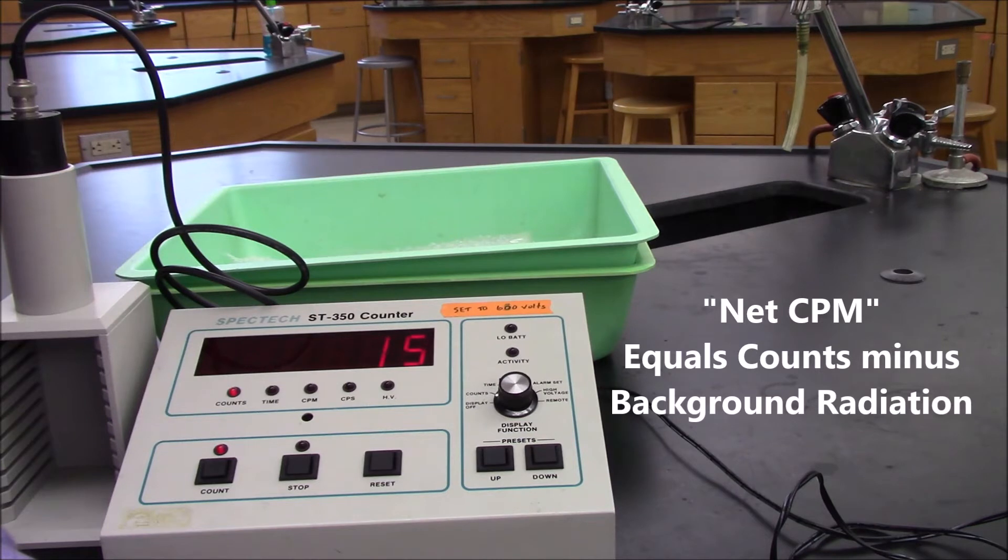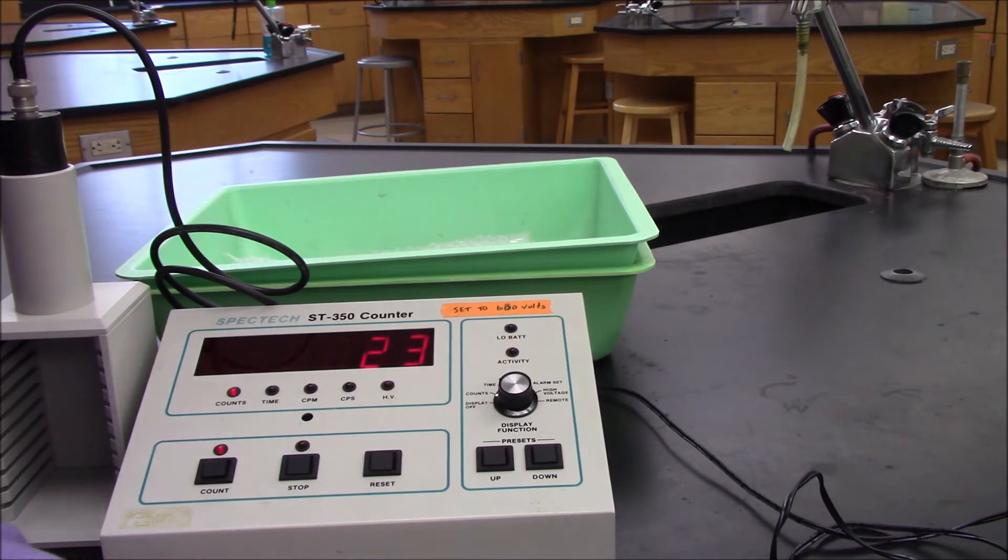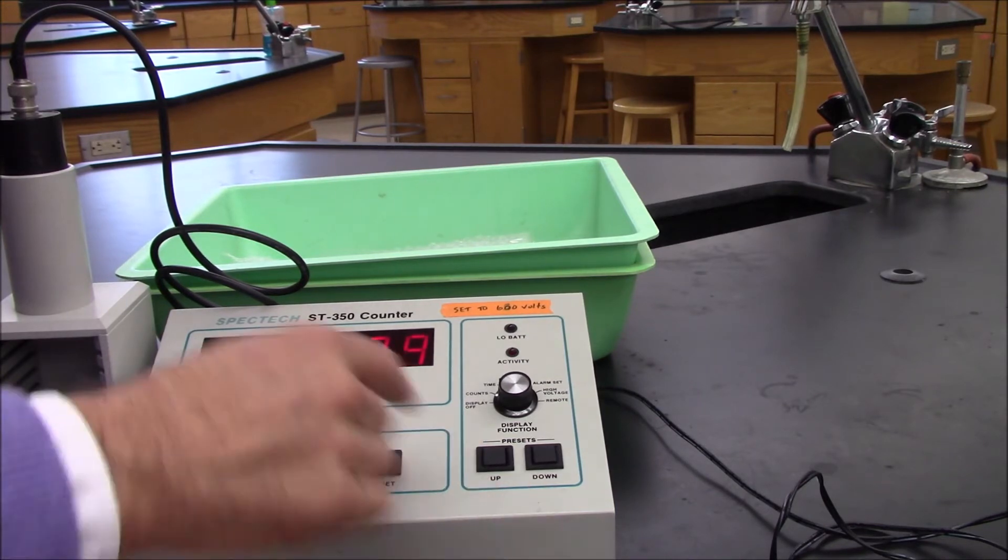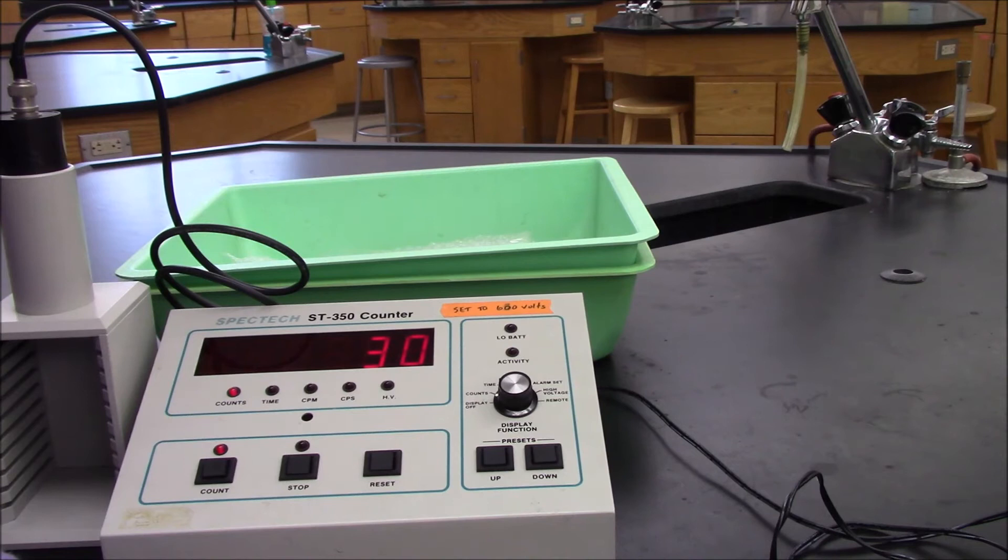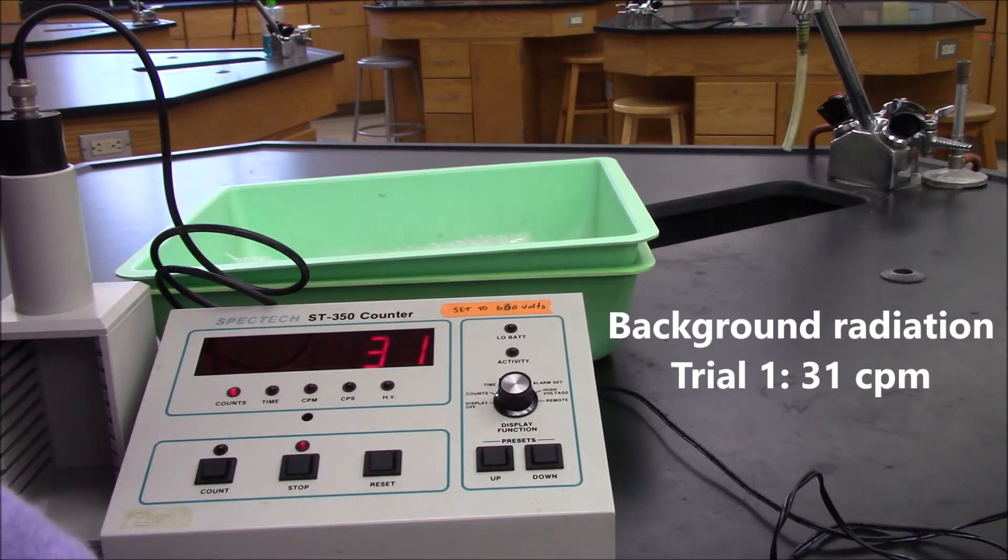So we're going to have to subtract those out each time. And that will give us what's called the net counts per minute. Now, I'm going to do this three times, but I'm only going to show you the end result in the other two cases. You can see there's some radioactivity here. It's harmless. So the first thing you'll do in your data sheet is you'll record 31 counts per minute for background radiation number one.